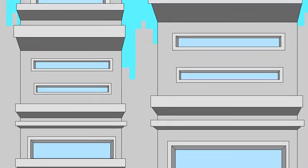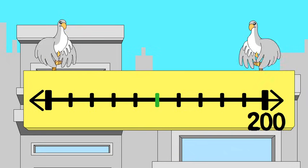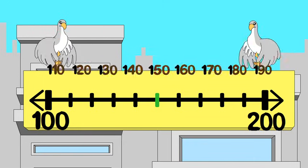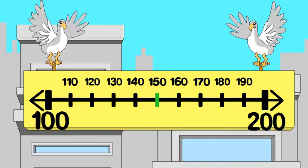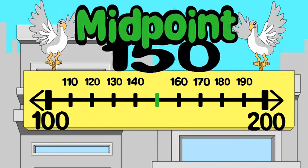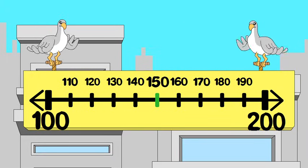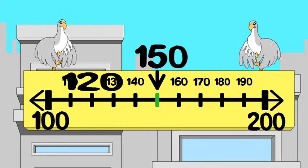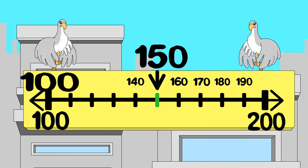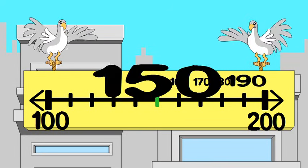Here are some useful things to know. You can show any number on a number line. Numbers to the right have a greater value than numbers to the left. The nearest hundred on either side of our number is a useful benchmark, and the midpoint is the number halfway between two benchmarks. If the number you want to round is less than the midpoint, round down. If it is at the midpoint or greater, round up.